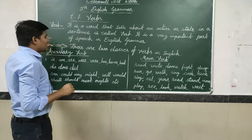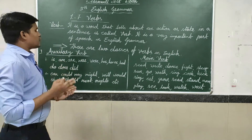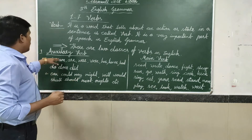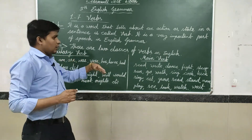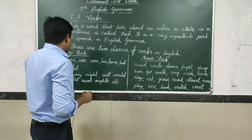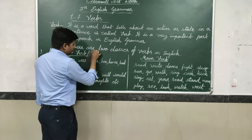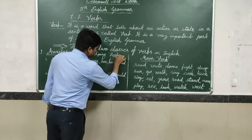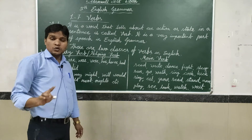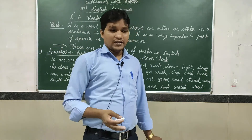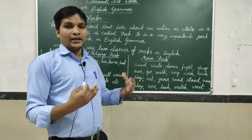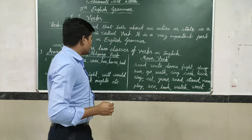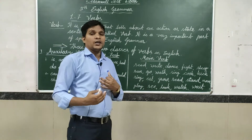Let us write it down. There are two classes of verbs in English. The first one is auxiliary verb and the second one is main verb. What is meant by auxiliary? Auxiliary verb is also called helping verb. It is helping the main verb — that is why it is called auxiliary verb, or helping verb.